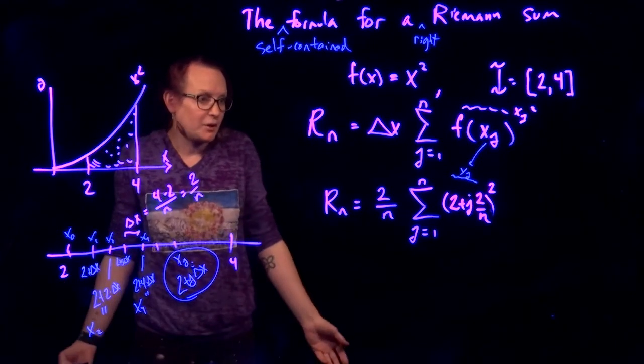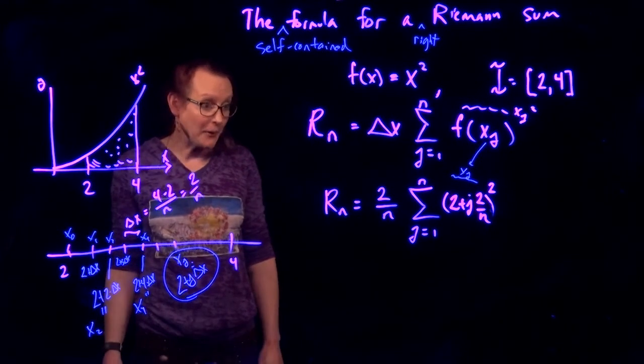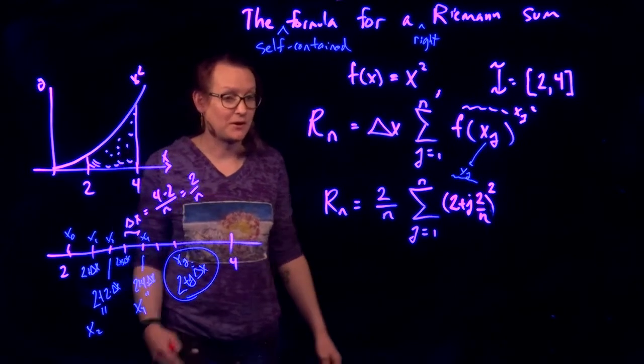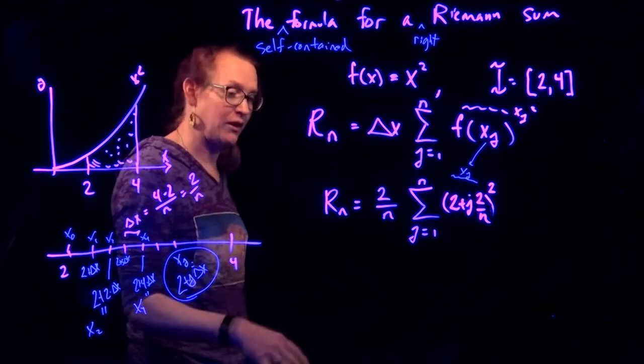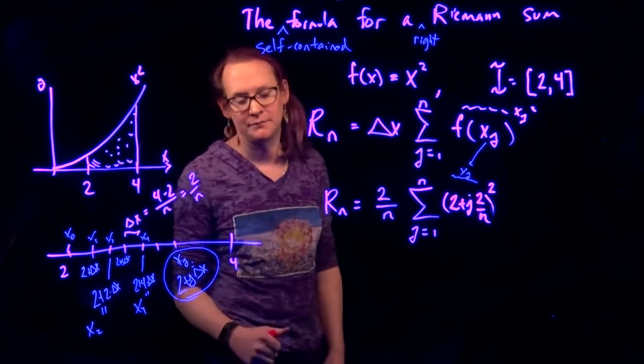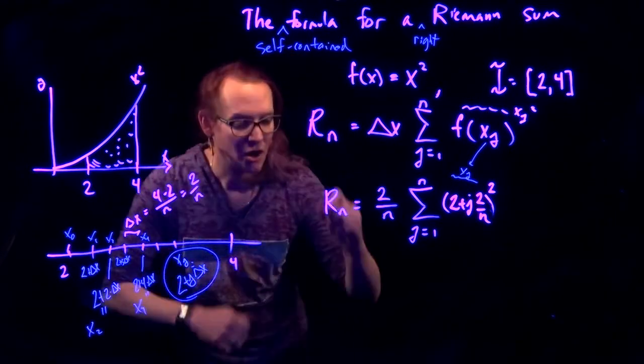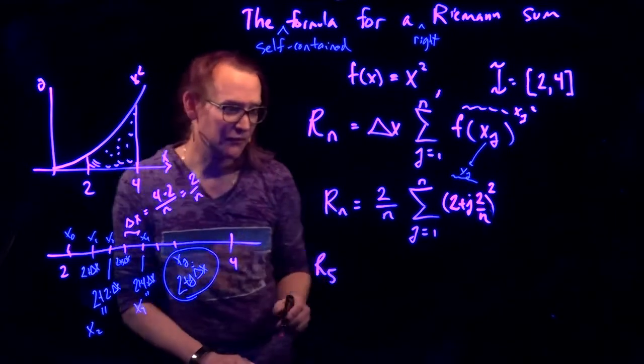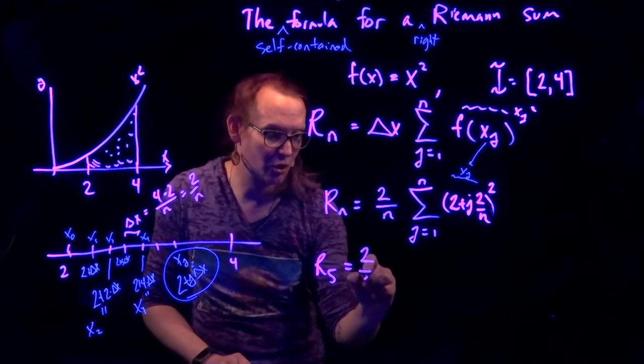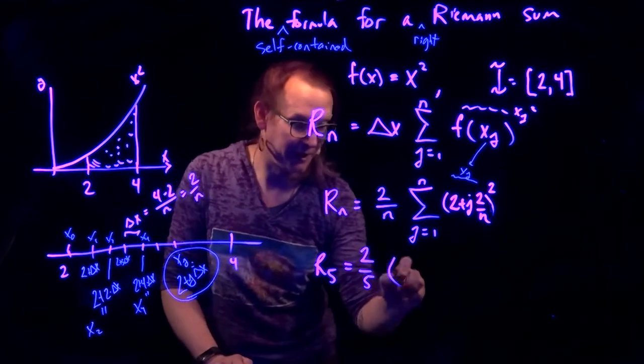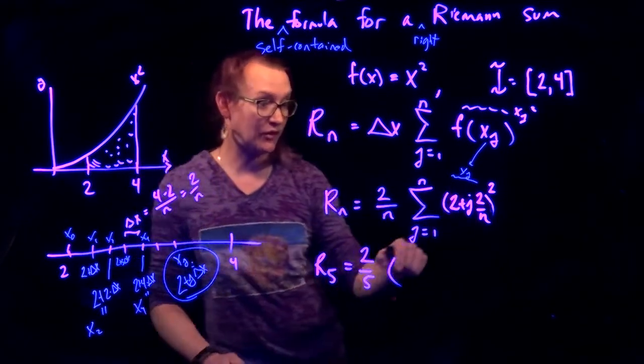I've got this standalone thing. And now I can actually do it. If we specify an n, say we were to be like n equals 5. Then we would be computing like r sub 5. That would be equal to 2 over 5 times, let's go ahead and start doing the sum.